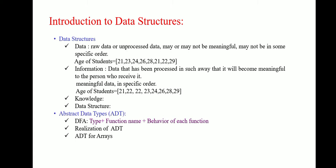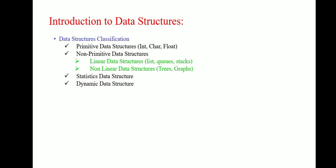Data structure is classified as primitive data structure and non-primitive data structure. Primitive data structure consists of integer, character, and float. Non-primitive data structure consists of linear data structure and non-linear data structure. Linear data structures are list, queues, and stacks, where non-linear data structures are trees and graphs.